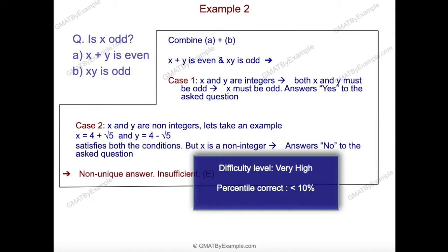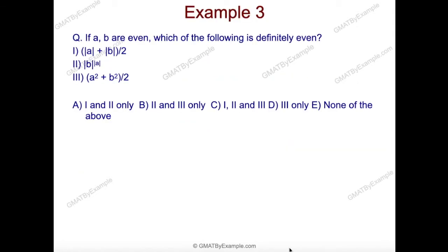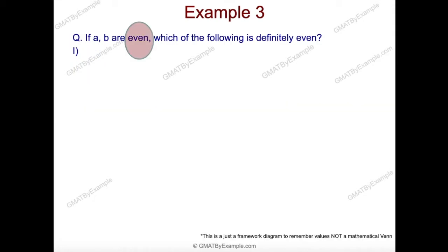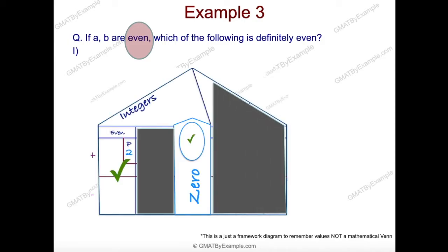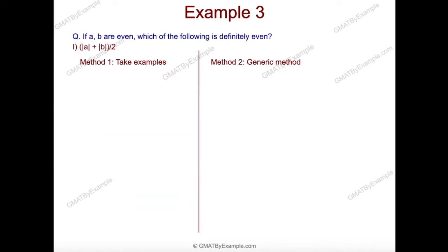Here is example three. We are given that a and b are even quantities — even automatically means they are integers. We are given three choices and have to figure out which is definitely even. Applying the Number House Framework: since a and b are even, we block out the non-integer portion and the odd column, but we have to consider even values whether positive, negative, or zero — because zero is also even. For choice one, we need to find out if |a| + |b| divided by 2 is definitely even. We can simply do this by examples.